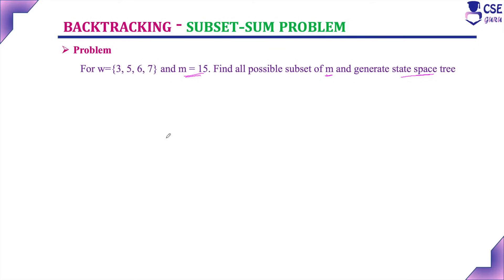We have already discussed two examples to implement the subset sum problem. This is the third example. Now we need to construct the state space tree. The state space tree will start with the initial value, which we consider as 0 — this is the root. We consider each element in the given set.